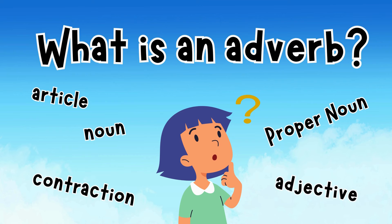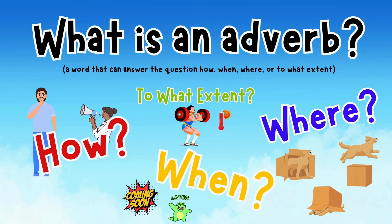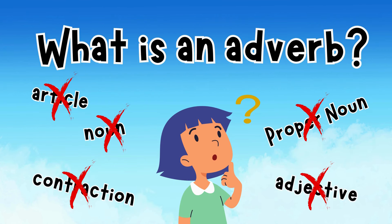There are lots of different types of words in English. Adverbs are the words that answer how, when, where, and to what extent. And they're not nouns, adjectives, or any other type of word.